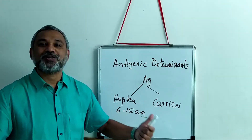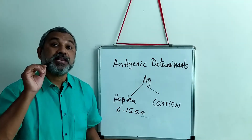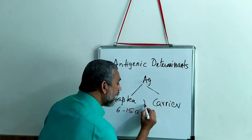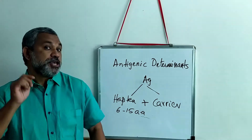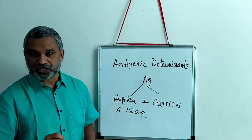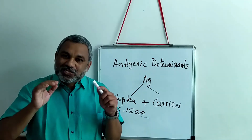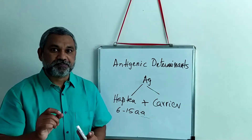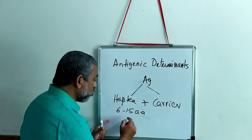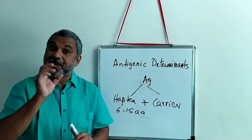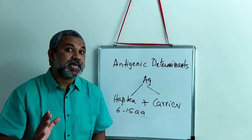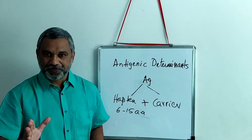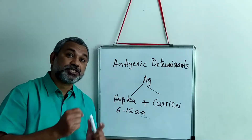The carrier can also be a sequence of amino acids which may not have immunogenic properties — it may not be able to induce an immune response on its own. But the hapten plus carrier combination is capable of inducing an immune response. This is normally the structure of an antigen. The hapten regions of 6 to 15 amino acids are the way by which an antigen expresses its foreignness, and this portion will be projected outward.